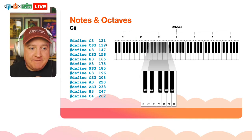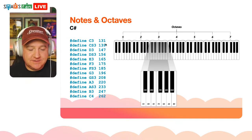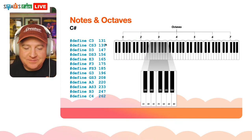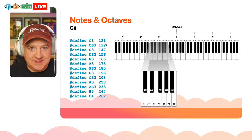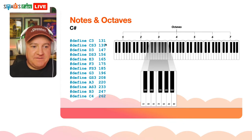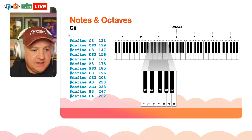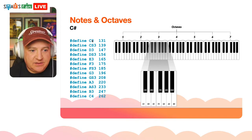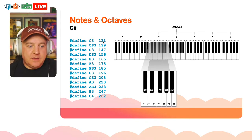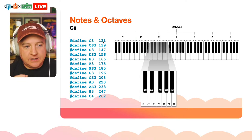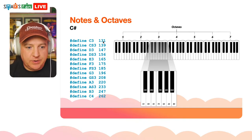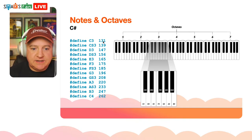To play a tune in code we need to define all these different notes. Rather than typing in the exact hertz, we use #define shortcuts. For example: #define C3 131 means wherever we write C3 in code, the compiler replaces it with 131. This makes it much easier to write tunes because we can think in musical note names rather than frequencies.